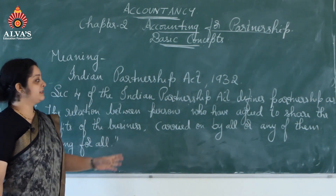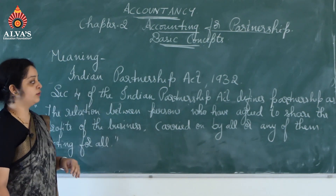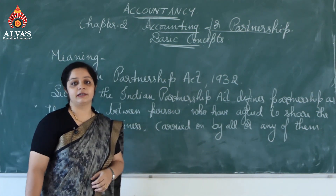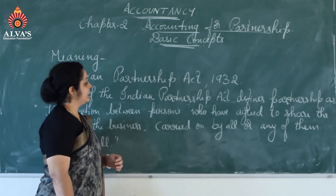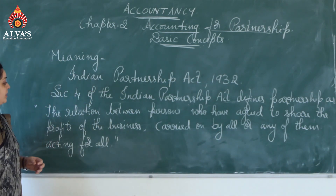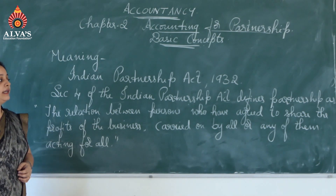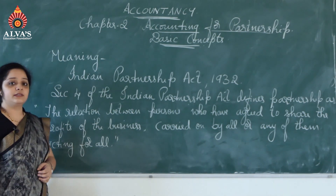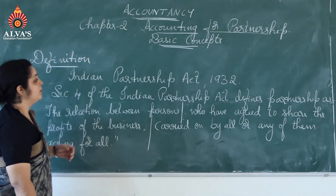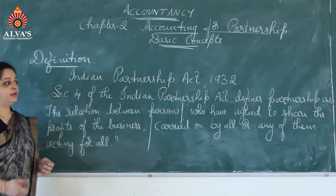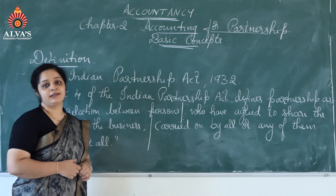So as I told you, this is a very famous definition given as per Section 4 of the Indian Partnership Act passed in the year 1932. Now once again, let me read this definition for you. The definition goes like this: the relation between persons who have agreed to share the profits of the business carried on by all or any of them acting for all. Let me explain this definition part by part so that you will be able to understand it very easily.